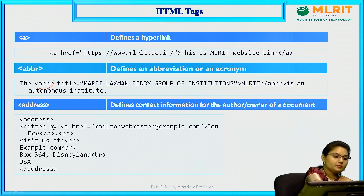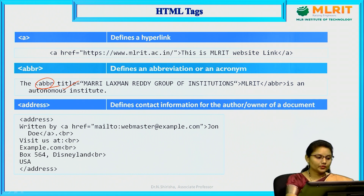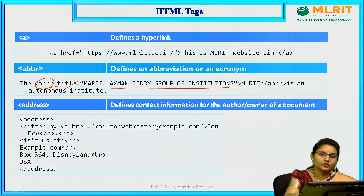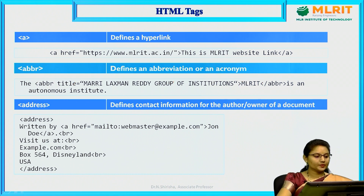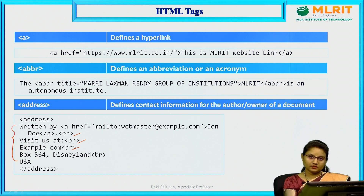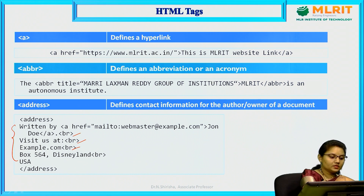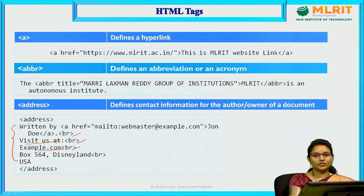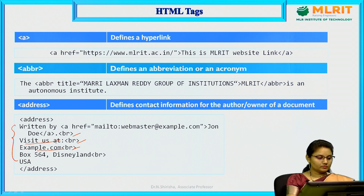We have already discussed href. The abbr element is for abbreviations or acronyms. The title attribute can also be used with abbr — when you hover over 'MLR', the full form 'Malhari Laxmanadi Group of Institutions' is displayed. The address element is used to display address content, which often includes special characters like colons, commas, and hyphens. You can use address tags for this, or other tags as needed.